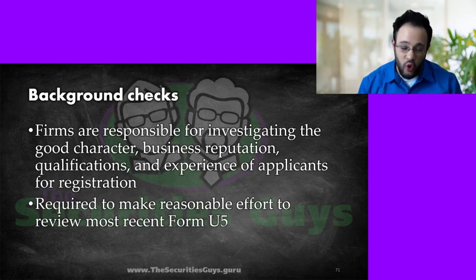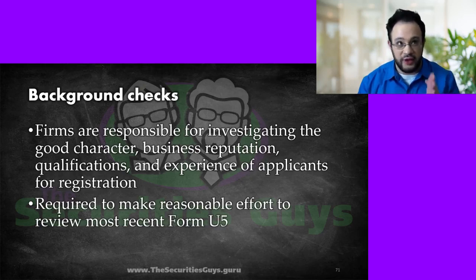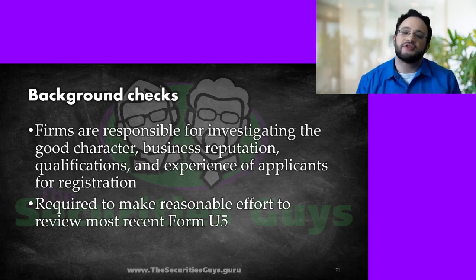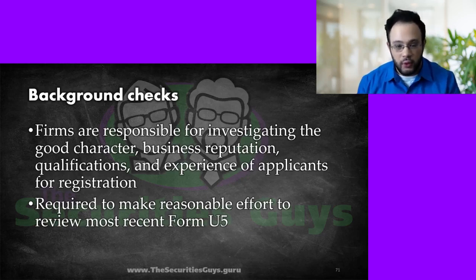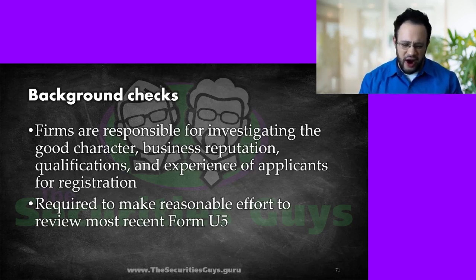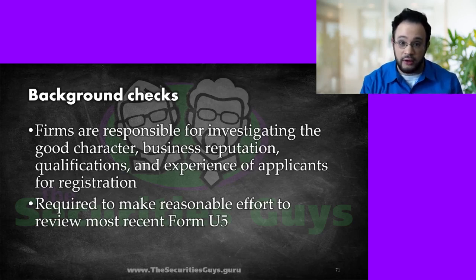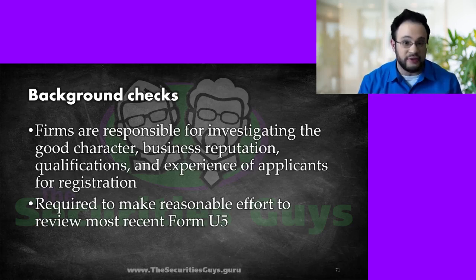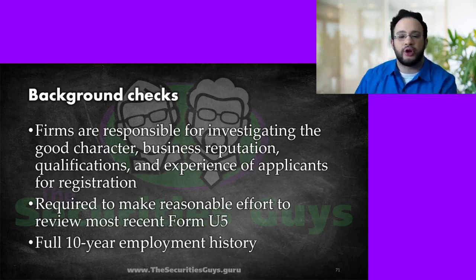Form U-4 is the form we fill out when we're trying to apply to a firm — to get membership. Form U-5 is the form that gets filled out when we leave, whether we quit or are fired. In this industry, you can't quit if we're going to fire you — that's the key difference. If there's a process underway where a U-5 is being filed, the rep cannot just quit to stop it. It's going to get filed and they are going to be fired. It's a full 10-year employment history check in the background.